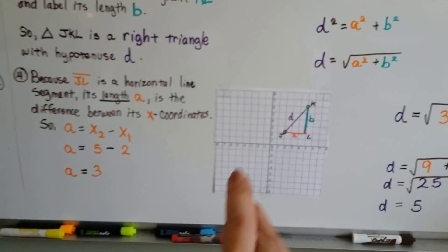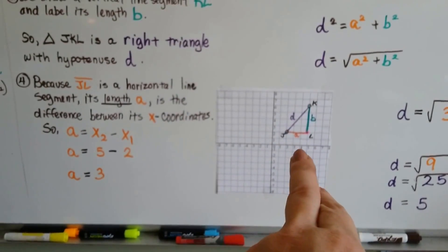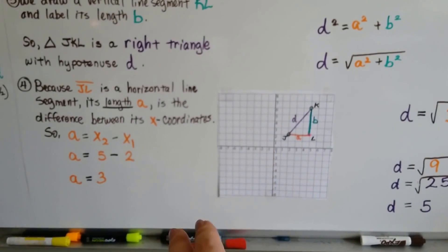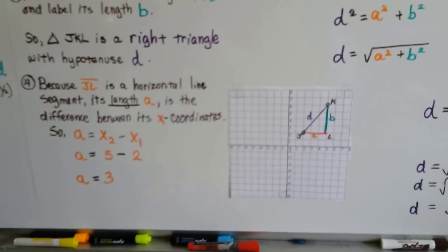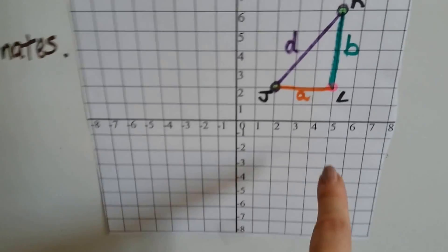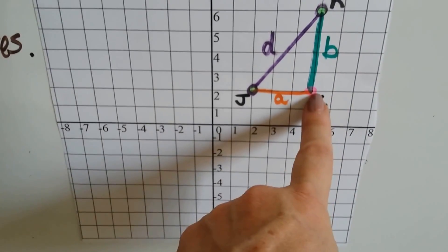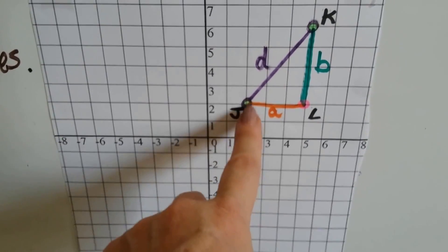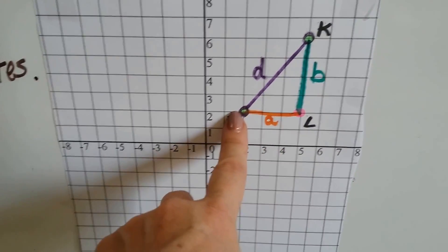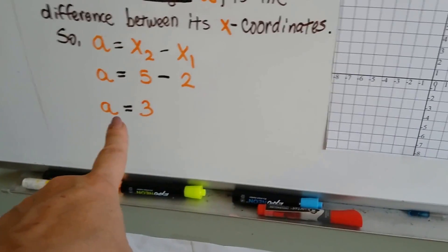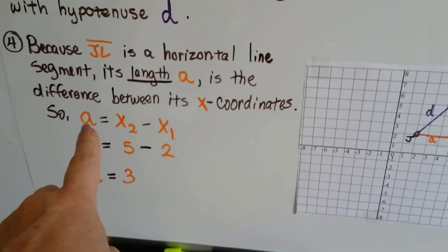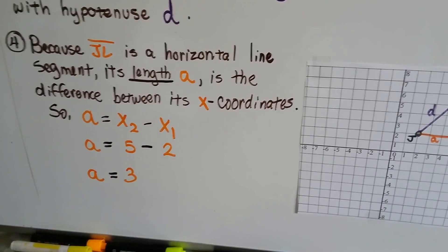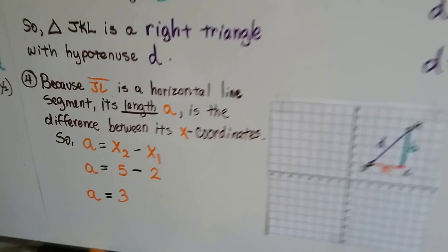Now, because jl, this orange one, is a horizontal line segment, its length a is the difference between its x-coordinates. So a is going to equal x2 minus x1. Well, where is x2? It's right here at 5, and x1 is at 2, so 5 take away 2. A is equal to 3. And look, 1, 2, 3. It is. So now we've got this a equals x2 minus x1, and that's going to help us in the distance formula.